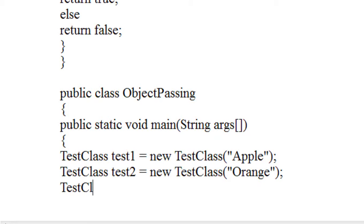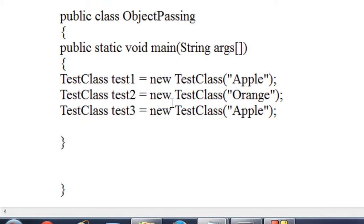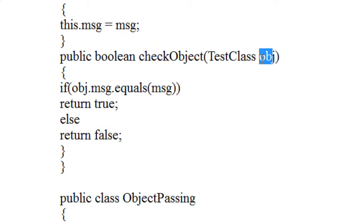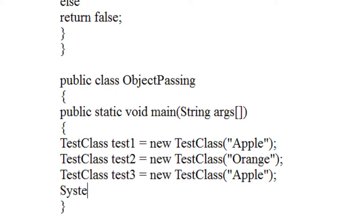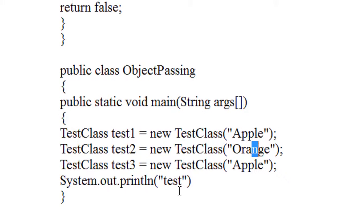Again I just create another object: TestClass test3 is equal to new TestClass, and I give it as apple. Now I am going to compare these objects using the method called checkObject by passing one object as an argument. So I just print it out — System.out.println. First I compare test1 and test2. Of course it is not equal because the two values are not equal.